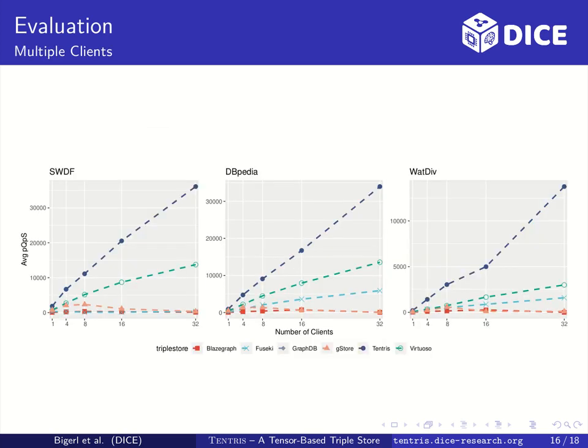Now let's see how the triple stores perform with multiple clients. The plot shows on the x-axis the number of clients requesting and on the y-axis the average penalized queries per second. One series in the plot immediately catches the eye. It is Tentris, plotted in dark blue with solid dots. Tentris is the only triple store that scales nearly linear with respect to the number of clients in all benchmarks.